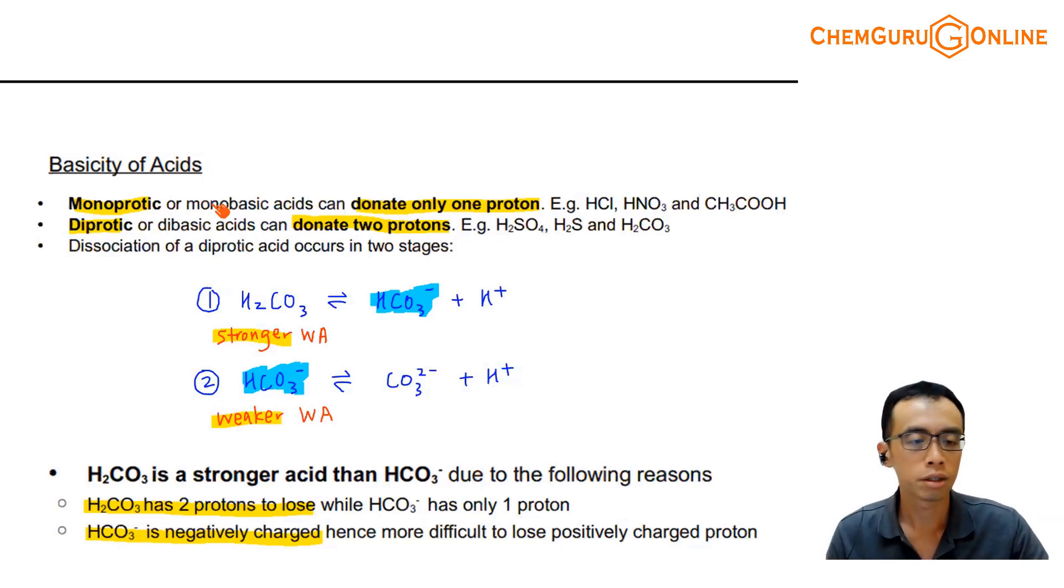For bases, the idea is the same. If I'm monobasic, I can accept one proton. If I'm dibasic, I can accept two protons. If I'm tribasic, then I can accept three protons. That's the idea involving basicity - how many H+ or how many protons to be transferred.